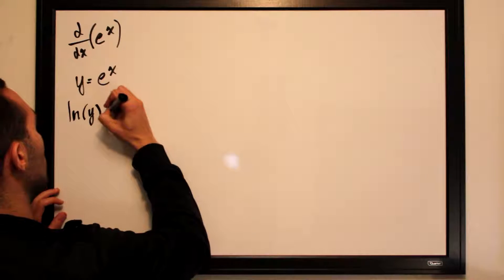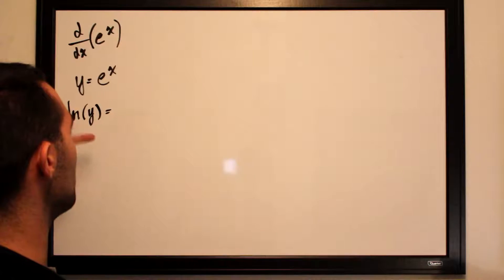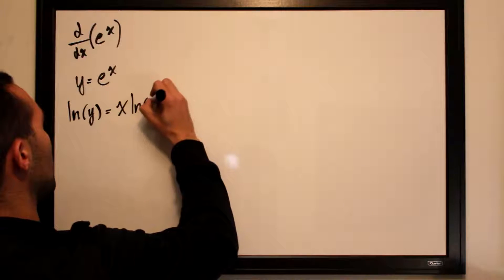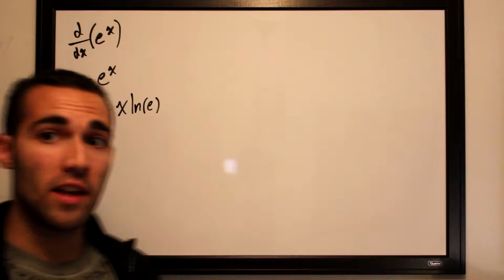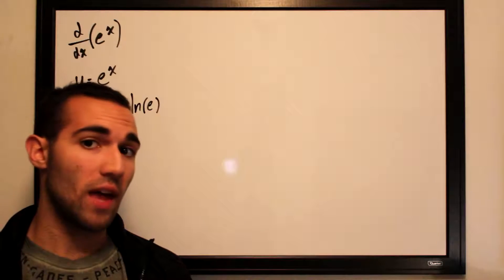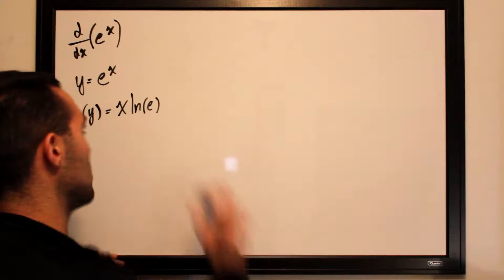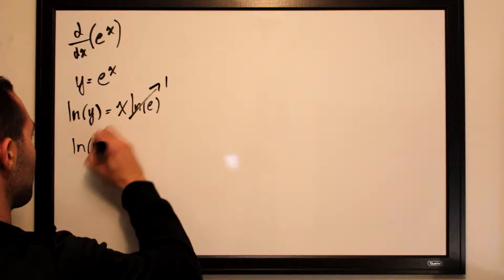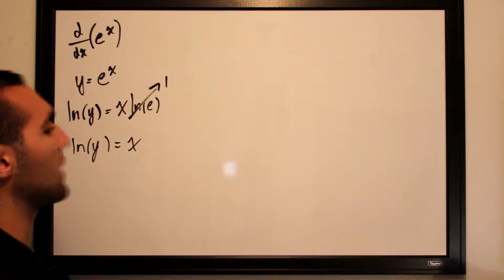The ln of y will be equal to—we can drag the exponent down to the front—so this becomes x times the ln of e. Now the ln of e has a constant value of 1, so that entire thing will completely vanish. This just becomes 1, so the ln of y is actually equal to x.